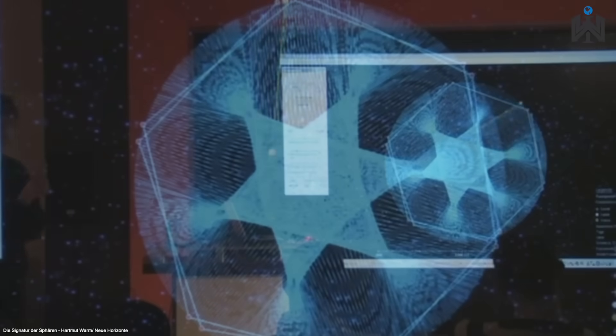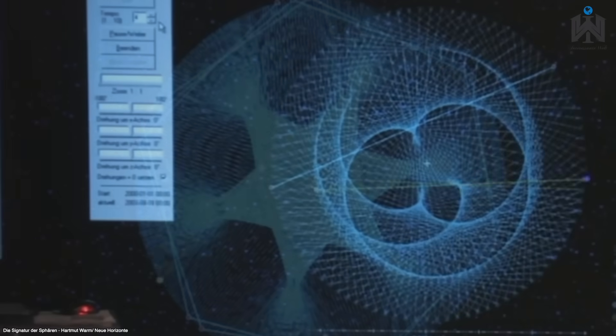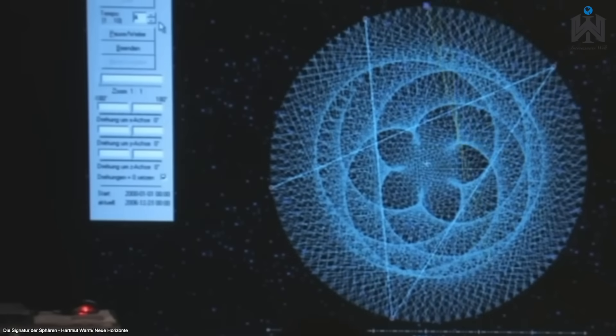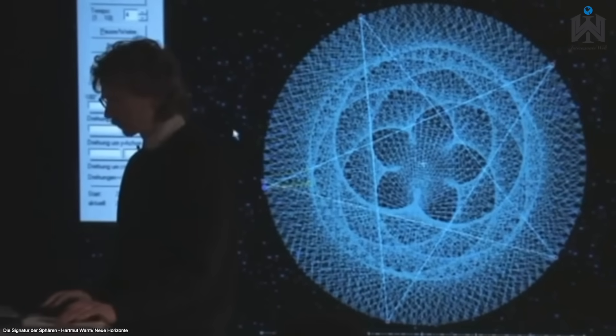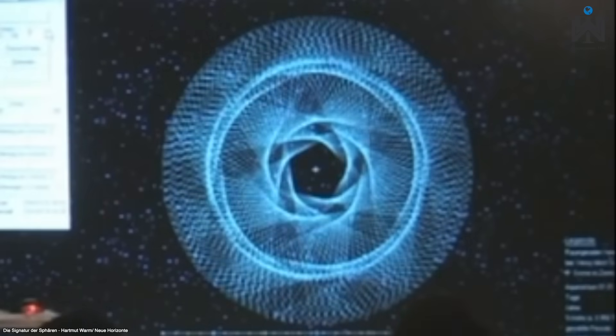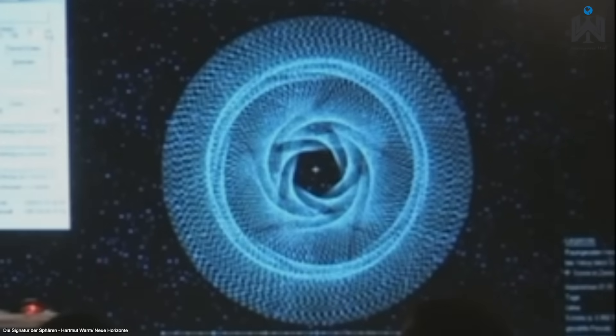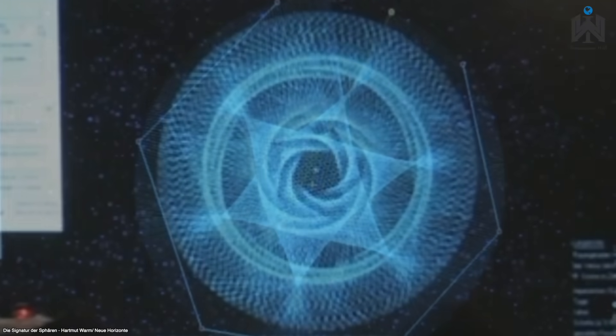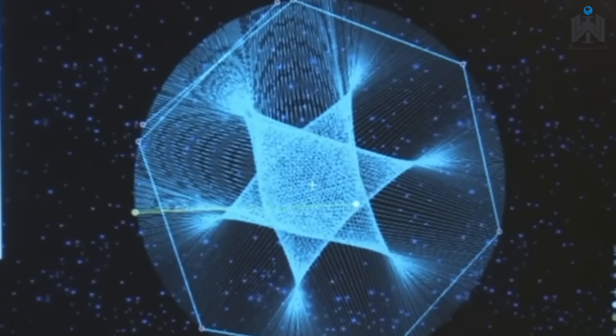Zentraler Vorwurf ist die selektive Datenauswahl, das sogenannte Cherrypicking. Es werden nur jene Planetenverhältnisse und Zeiträume betrachtet, die besonders ästhetische Muster ergeben. Zudem wird bemängelt, dass seine Theorie keine empirisch überprüfbaren Vorhersagen macht, ein grundlegendes Kriterium wissenschaftlicher Modelle.